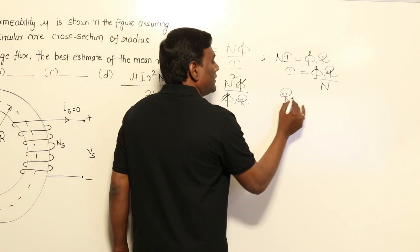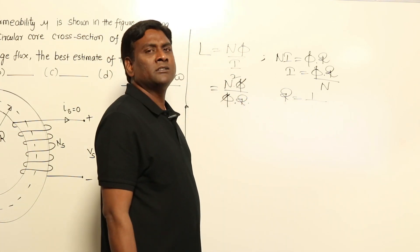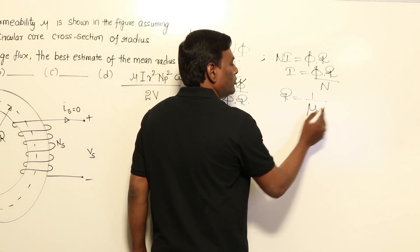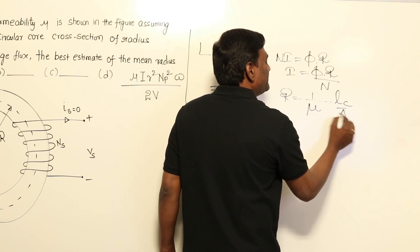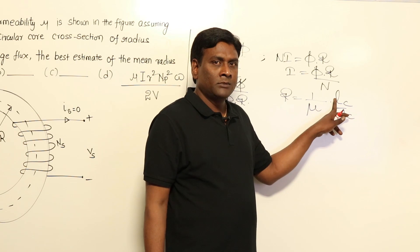What is reluctance equal to? Reluctance is similar to resistance ρL/A or 1/(σA). This is going to be 1/(μ_0 μ_r) × l_c/A_c.